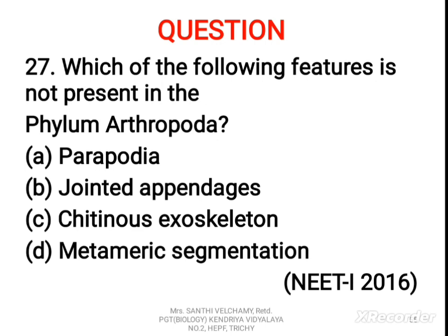27th question: which of the following features is not present in phylum Arthropoda? A) Parapodia, B) Jointed appendages, C) Chitinous exoskeleton, D) Metameric segmentation. The correct answer is parapodia. Parapodia are flattened, fleshy, vertical flap-like outgrowths of the body wall found in Annelida only, on the lateral side of trunk segments. They are hollow structures enclosing coelom and show dual function — they help in locomotion and respiration.